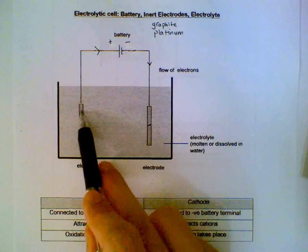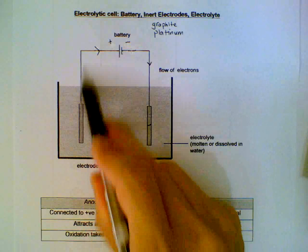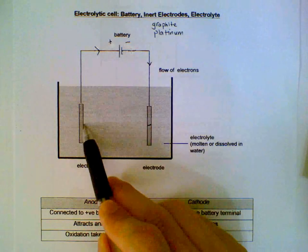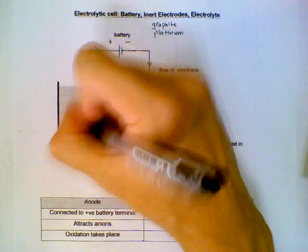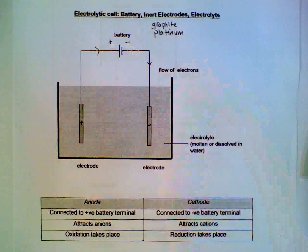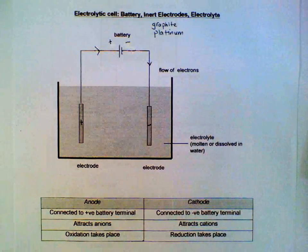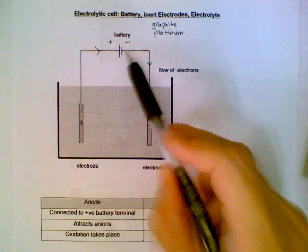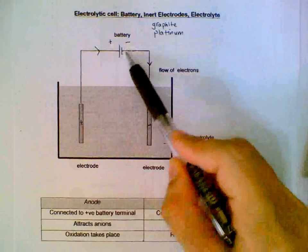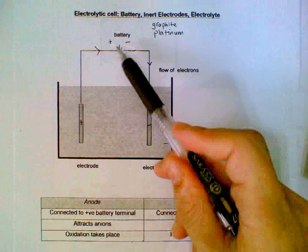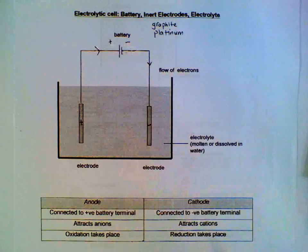Conversely, you can visualize it as the electrons are leaving this area, causing this electrode to be positively charged. So the negative electrode is connected to the negative terminal of the battery. The positive electrode is connected to the positive terminal of the battery.